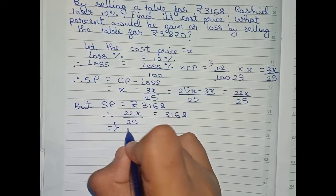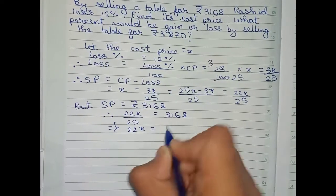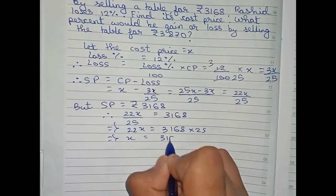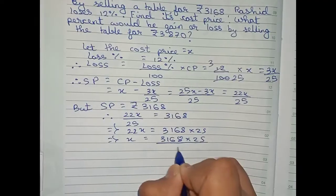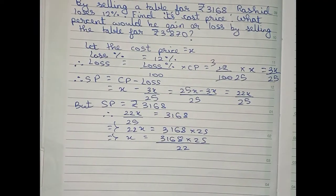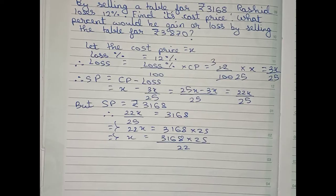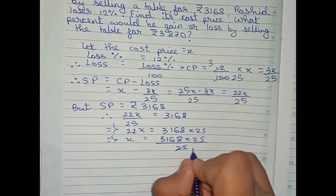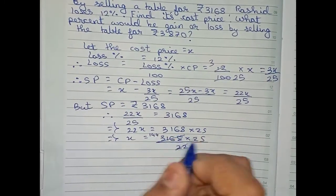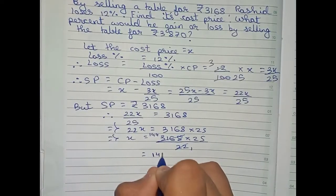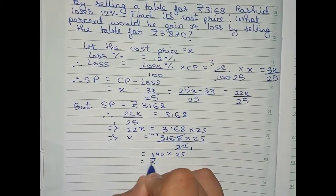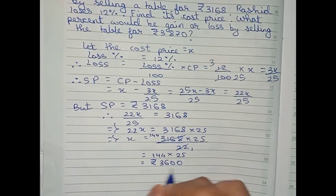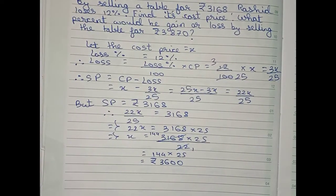So 22x equals 3168 into 25, and therefore x equals 3168 into 25 by 22. Simplifying — 3168 divided by 22 gives 144, so x equals 144 into 25, which equals rupees 3600. So the original cost price of the table is rupees 3600.